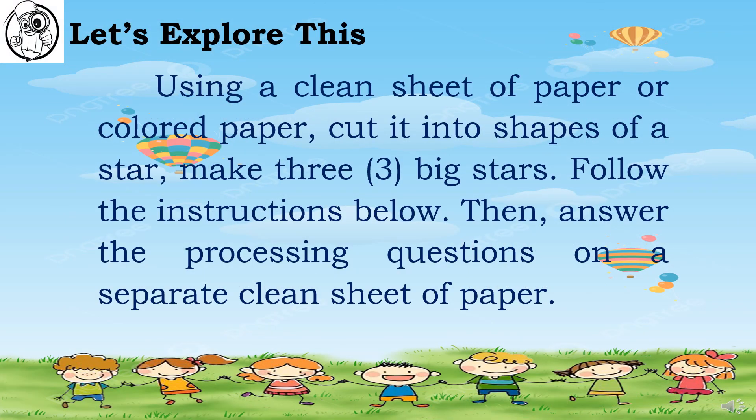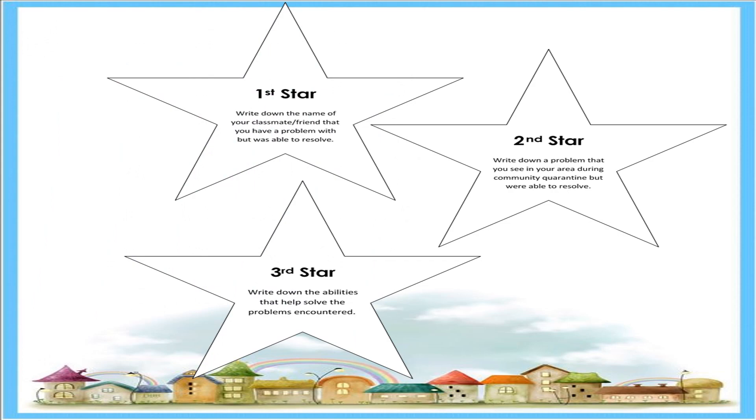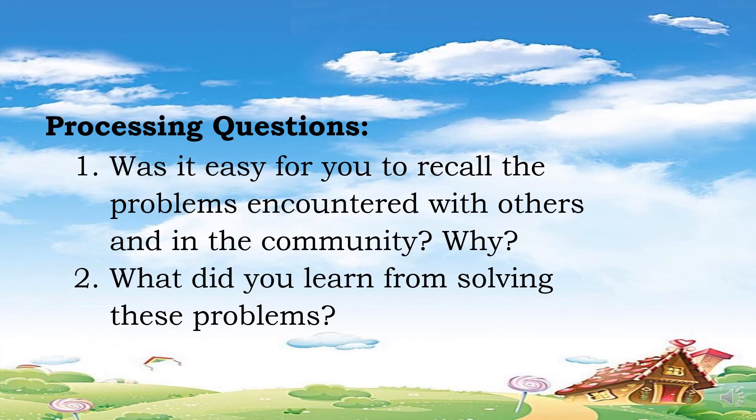For your Let's Explore This activity, using a clean sheet of paper or colored paper, cut it into the shape of a star — make three big stars. Follow the instructions below, then answer the processing questions on a separate clean sheet of paper. After finishing the activity, answer these two processing questions: Number 1 — Was it easy for you to recall the problems encountered with others and in the community? Why? And Number 2 — What did you learn from solving these problems?